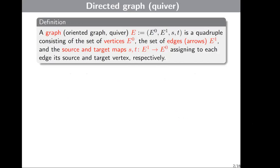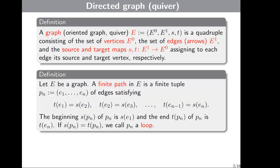First, we need to define a graph — sometimes called a quiver — which is a quadruple where E0 and E1 are sets of vertices and edges respectively, and s and t are maps where s assigns to each edge its source vertex, while t assigns its target. The next definition is the definition of a finite path.